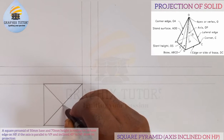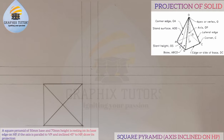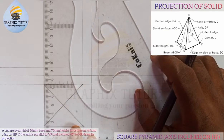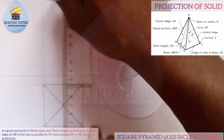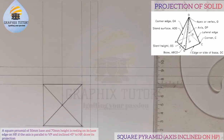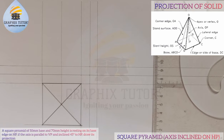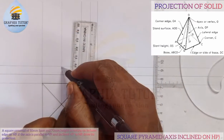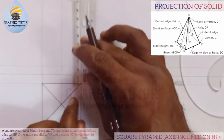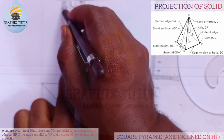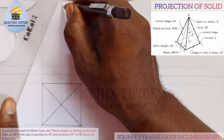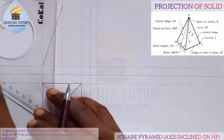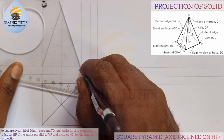This is the apex point. Now I'm going to project this upward, including the center point — the apex. We are told that this pyramid has a height of 70 millimeters, which I'll call the axis. So I measure 70 from this point upward — from 0 to 7 is 70. I'll close it up from here to this point, and from here to this point, and from here to this point.